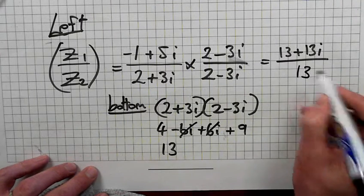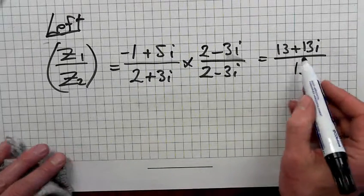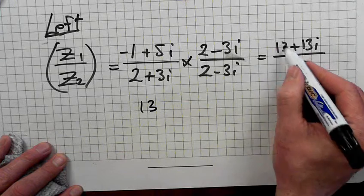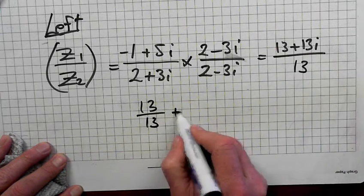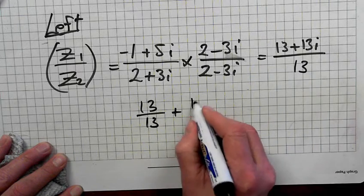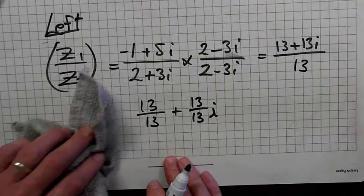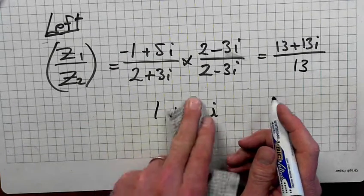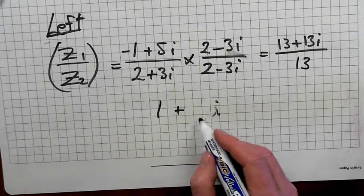So the answer up here is 13 over 13. Hold on, we're not finished. We'll bring that down here. 13 over 13 plus 13i over 13. 13 over 13 is 1, and that's 1. So it's 1 plus 1i, or 1 plus i.